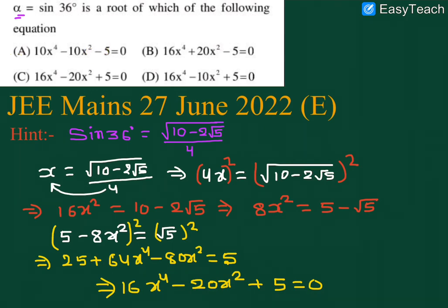16x⁴ − 20x² + 5 = 0 is option C. Option C is the correct answer. Thank you very much. Stay tuned to get more such videos.